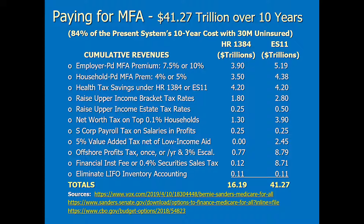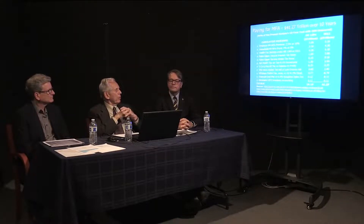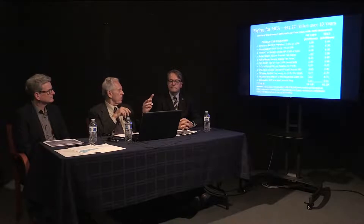A financial institution fee: brokerage companies and banks would be subject to a 0.4% security sales tax. Whenever a stock is sold or bought, 0.4%. The SEC is funded about $2 billion a year with something like a 0.00013% tax — an amazingly efficient way of getting revenue. We're going to talk about some caveats about that too, because other countries have tried this, but we're being much more cautious than other countries were.